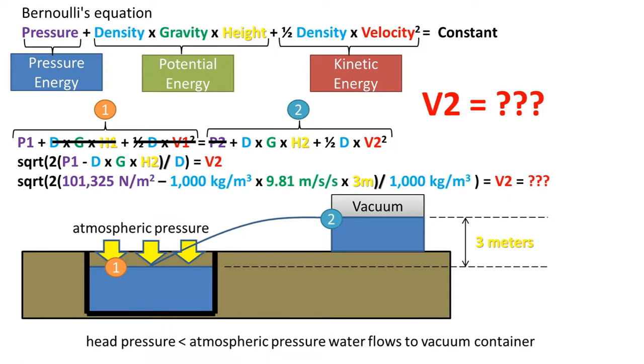Plugging in the atmospheric pressure in pascals, the density in kilograms per meter cubed, the acceleration due to gravity in meters per second per second, and the height difference in this example of three meters, we get a velocity at point two of 11.99 meters per second.